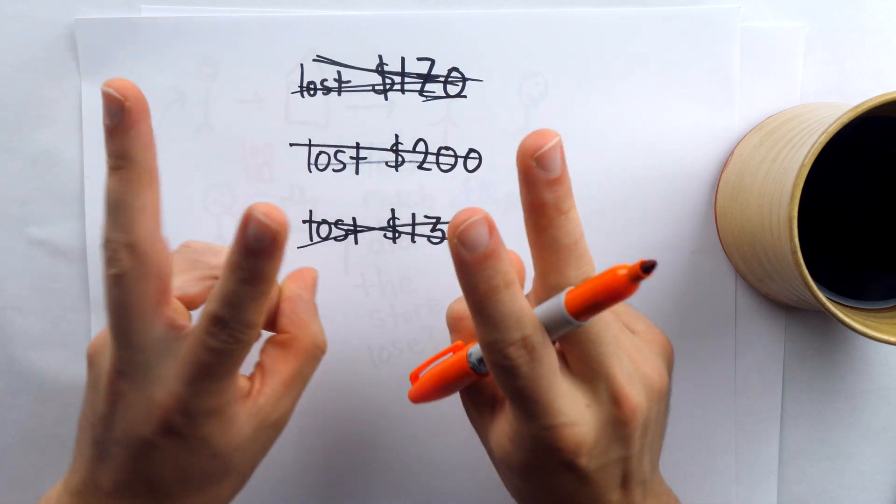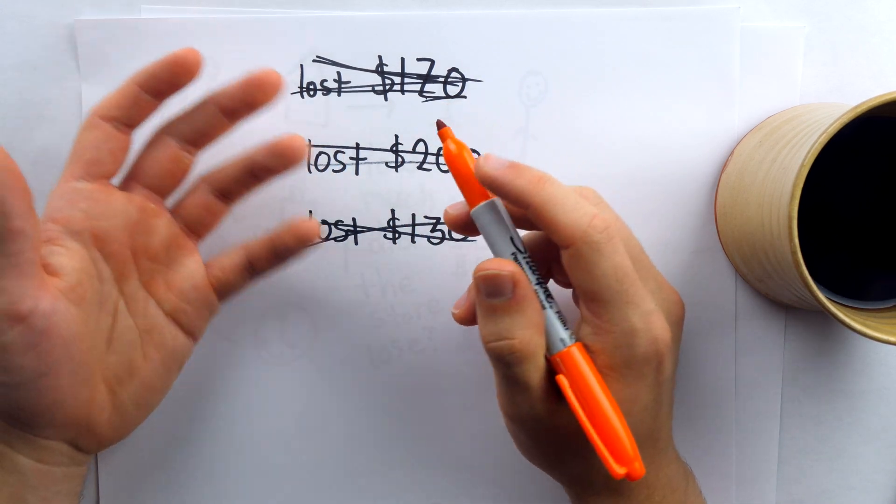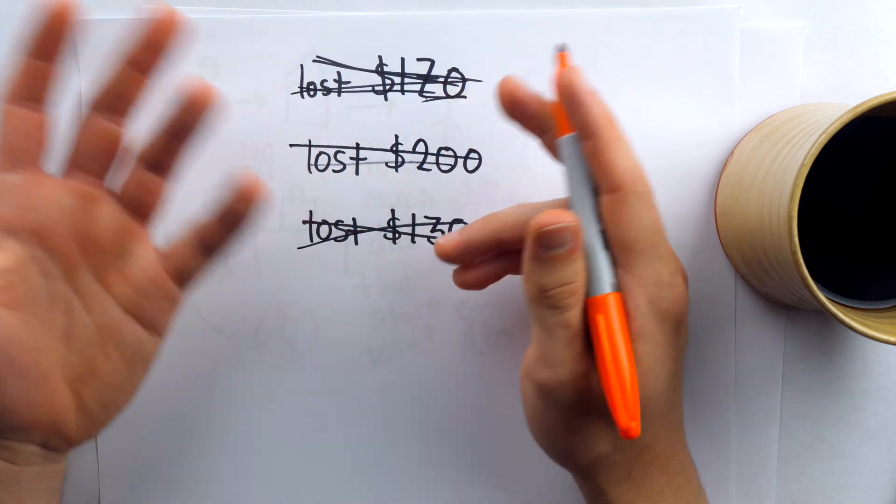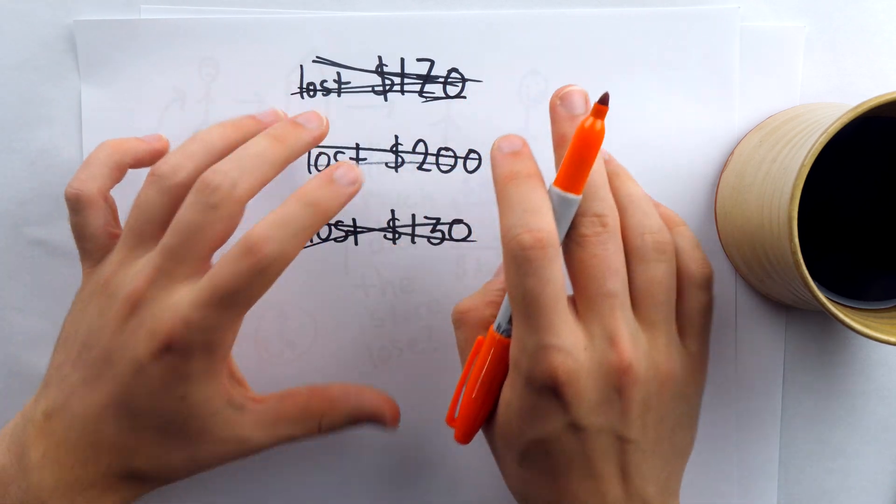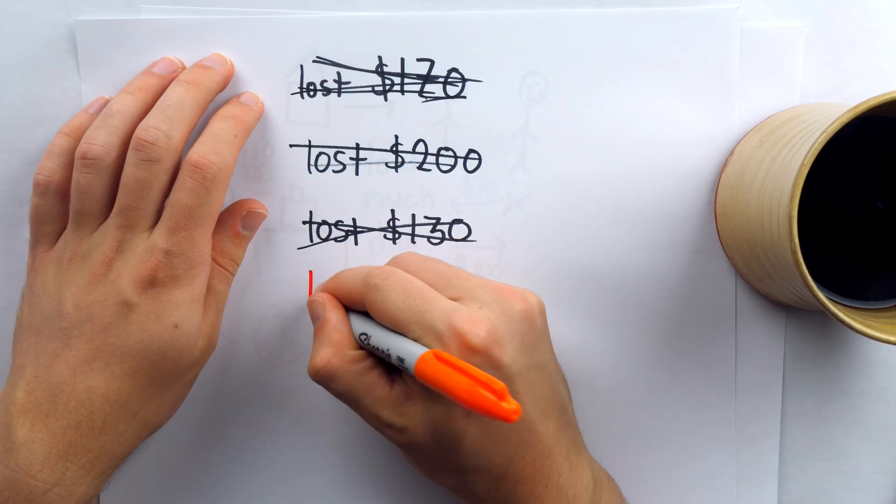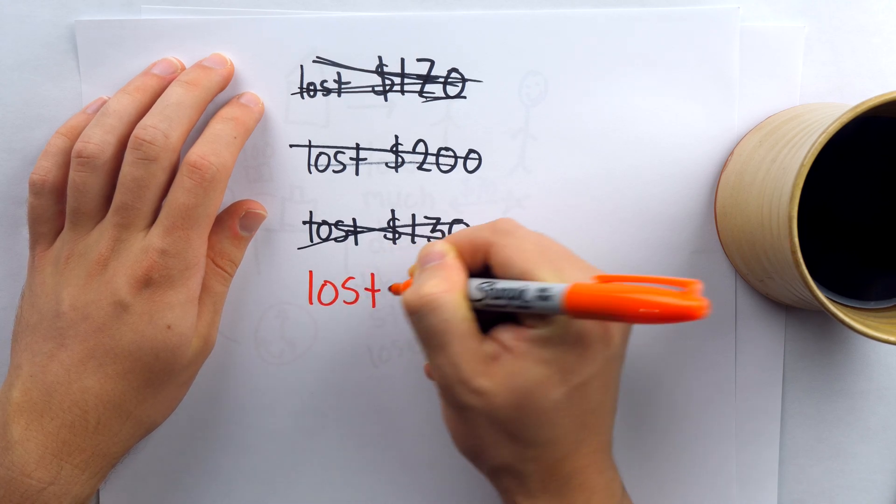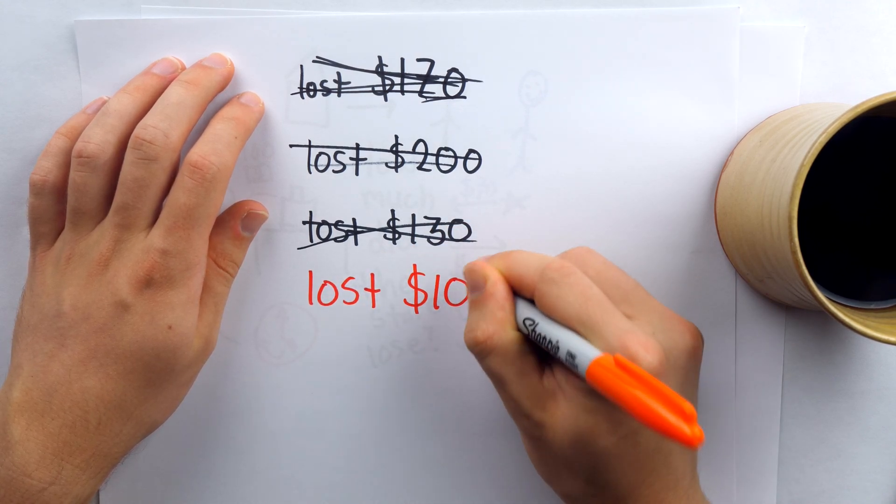So the fact that that transaction is included in the riddle is just to confuse you. It's completely irrelevant. The only thing that was stolen from the store was the $100, and so the amount that the store lost is $100.